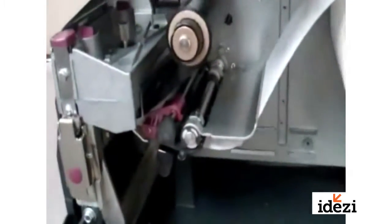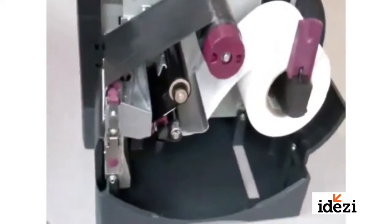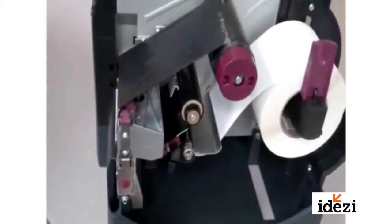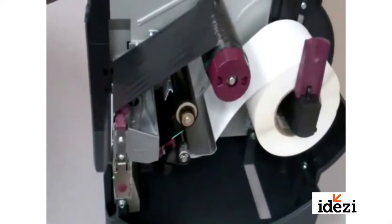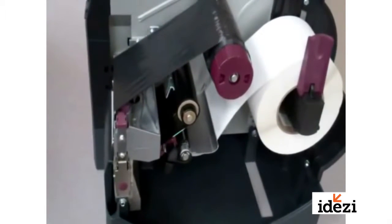What the media guide does is it keeps your media from walking back and forth out of the media path. If your media ever walks out of the media path, it'll actually pull the ribbon with it. When it pulls the ribbon with it, it'll always cause a ribbon wrinkle.